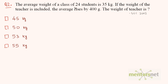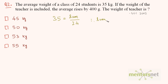Question 2: The average weight of a class of 24 students is 35. If the weight of the teacher is included, this average rises by 400 grams. What is the weight of the teacher? We have the average weight of the class of 24 students as 35, so 35 equals sum of weights divided by 24. The sum of student weights is 35 times 24, which is 840.